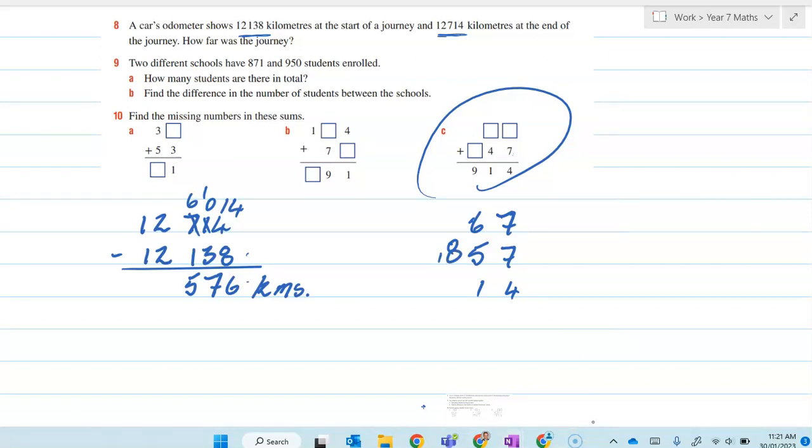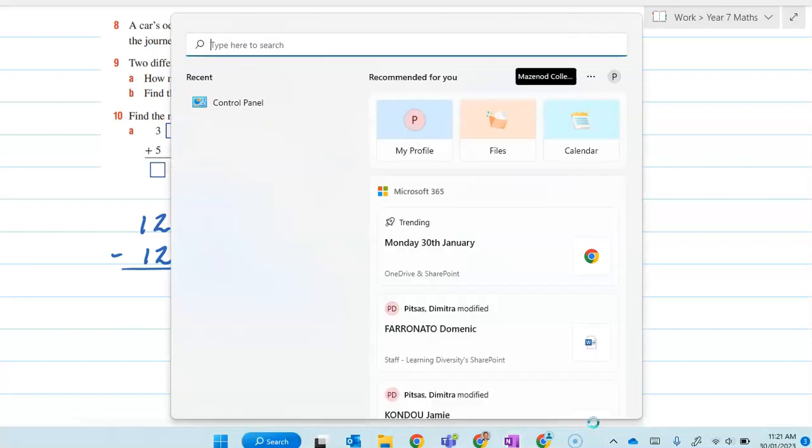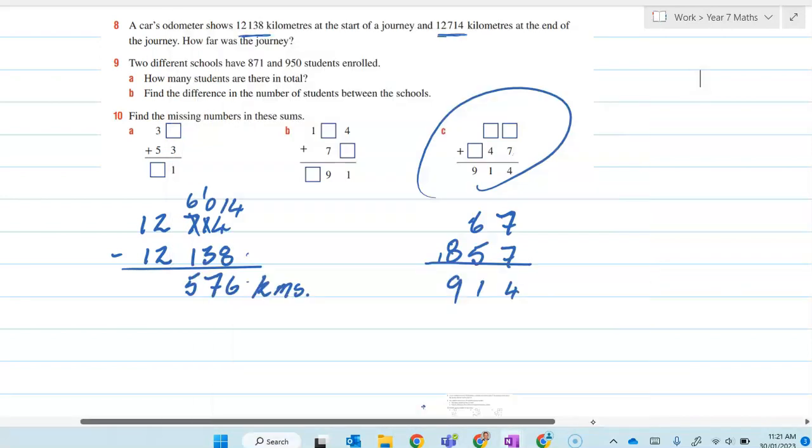That becomes 1. So we've got 914. So there we have that. We filled that in to see what was missing.